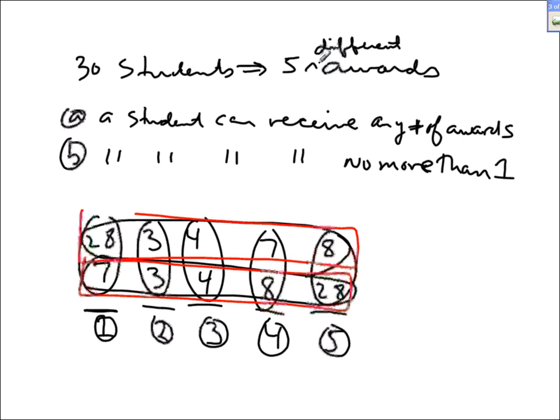For part B, where you cannot win more than one award, we are choosing 5 people from the 30. Since the order matters — which award each person wins — we use permutations.